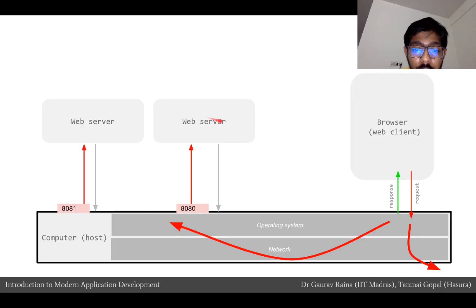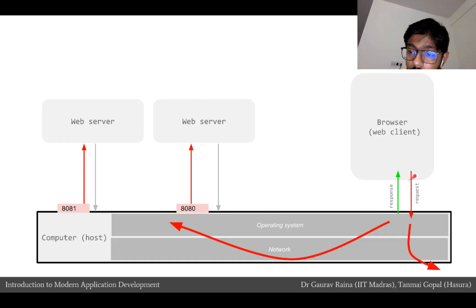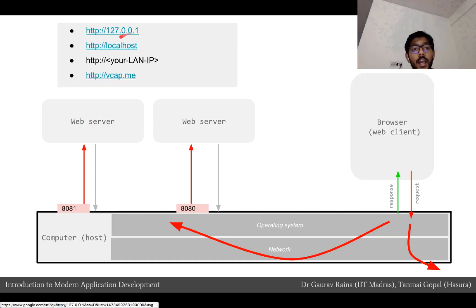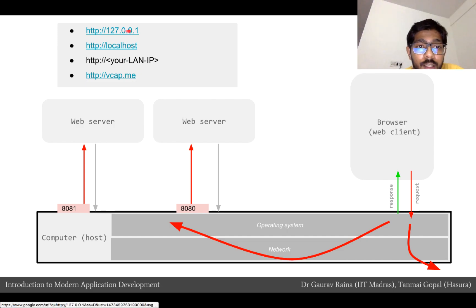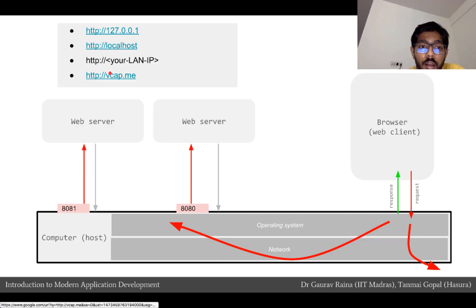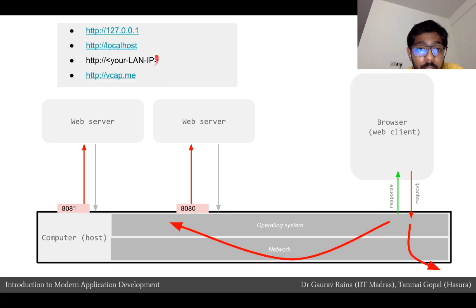In our case we made a request to IP:8080, so it went to the process listening on port 8080. The request goes up to the web server and comes back down through the same connection. Similarly, when we made a request to our IP:8081, the connection looped back to the process on port 8081 and hit that web server. These special IPs that redirect back to our own system are 127.0.0.1; 'localhost' is the hostname, 'vcap.me' is also a hostname that often redirects back to the same system, and your LAN IP will also loop back to your own system.